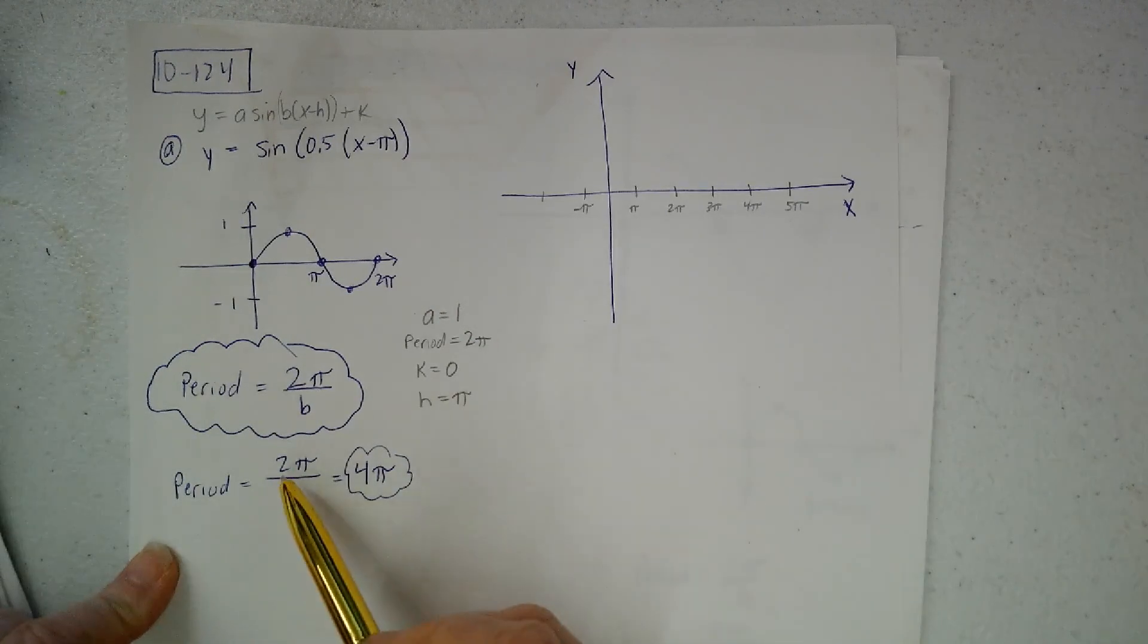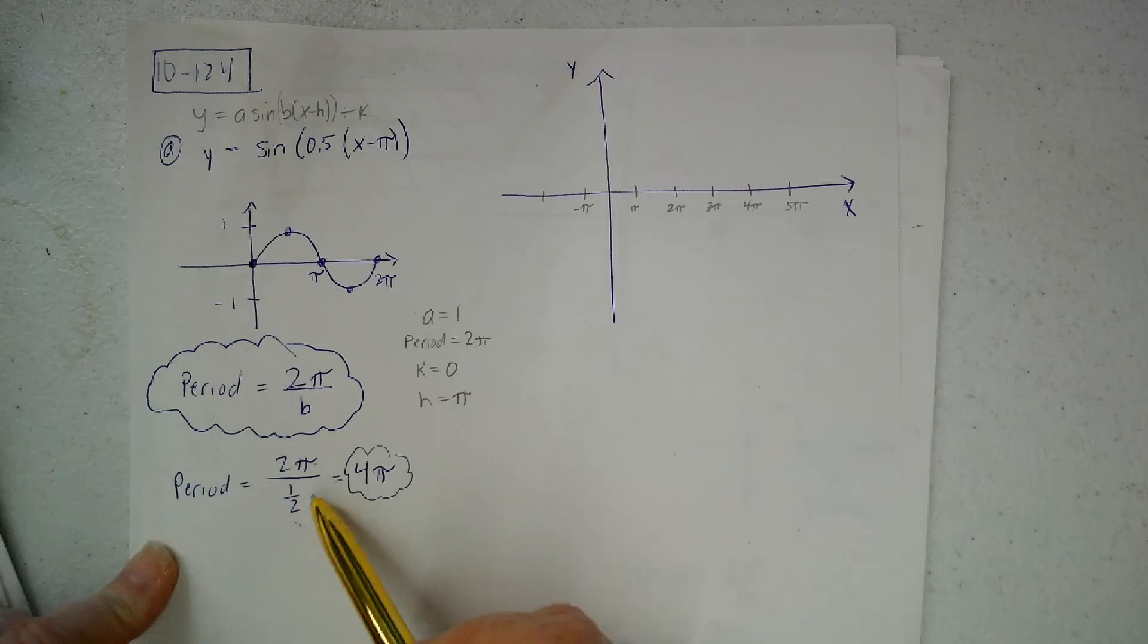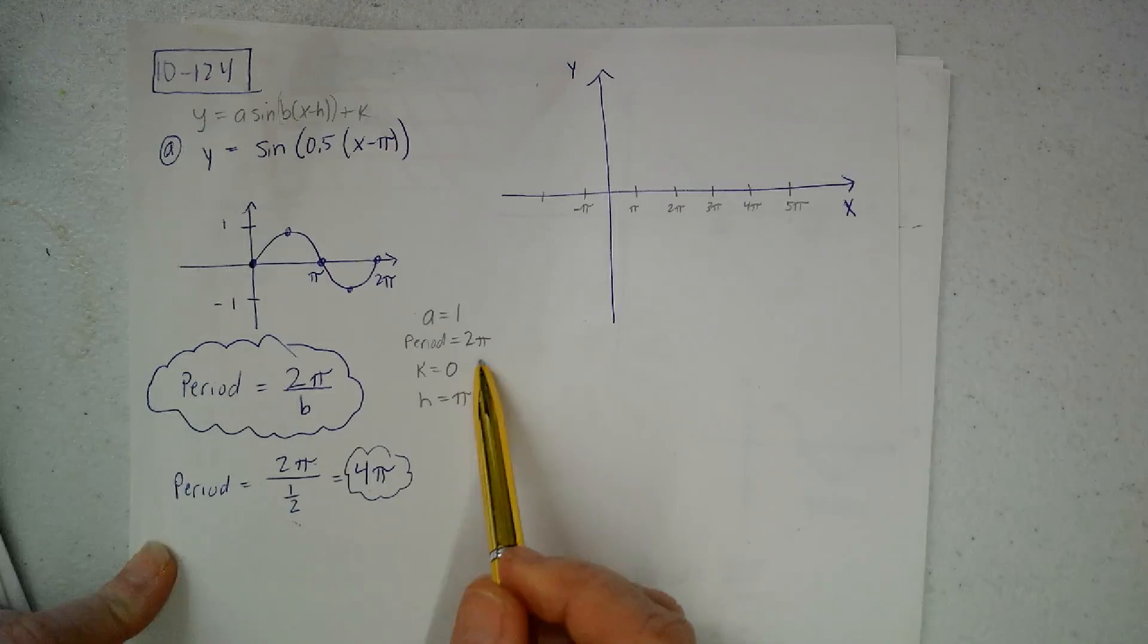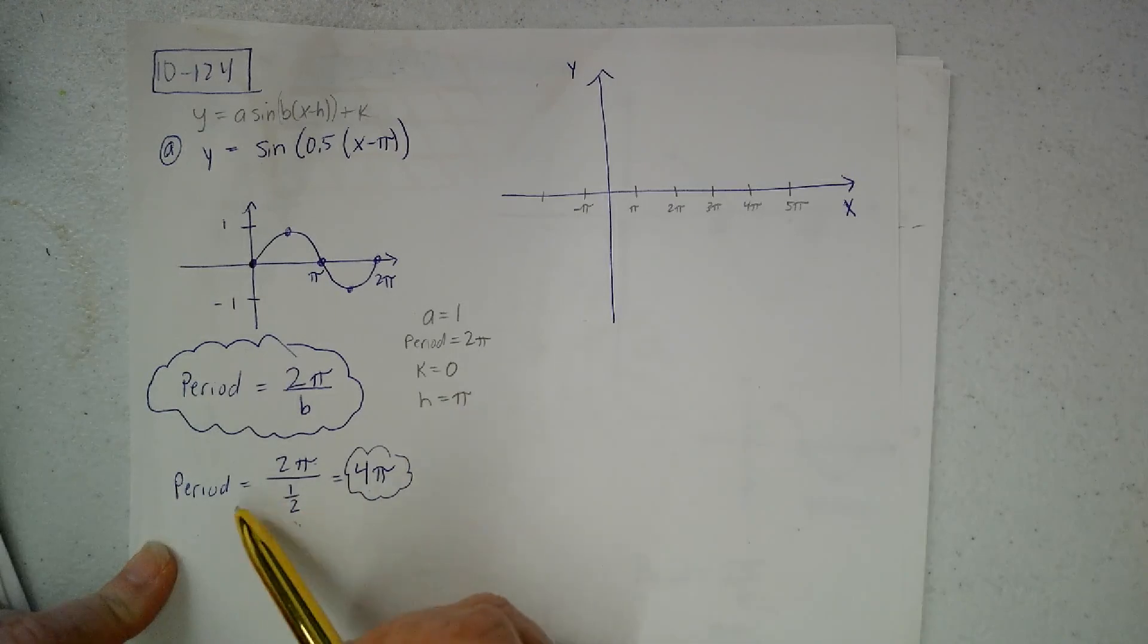I know that period is 2π over B, so I plug B in there. And that helps me find my period. So 2π divided by a half. If you multiply the top and bottom by 2 to get rid of this, then you end up with 4π.